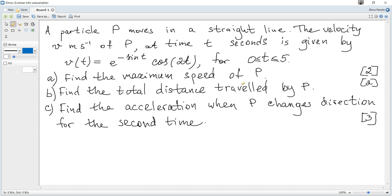We know that speed is the absolute value of velocity. So we need the greatest positive value of velocity or the least negative value of velocity.